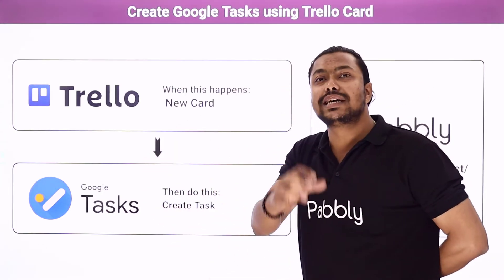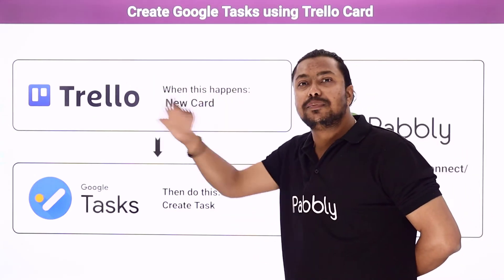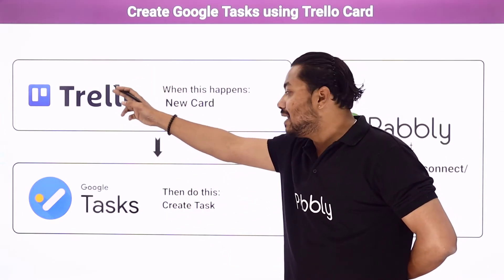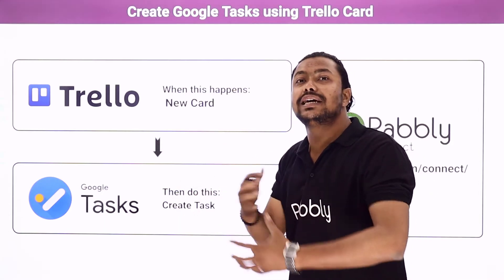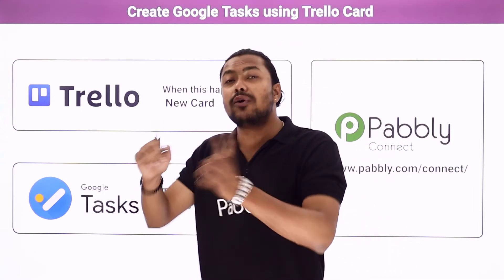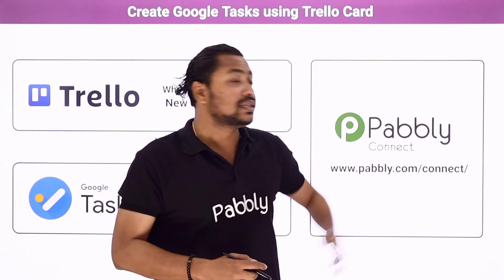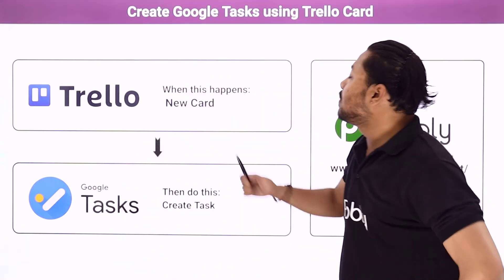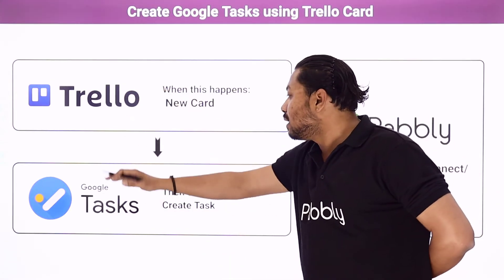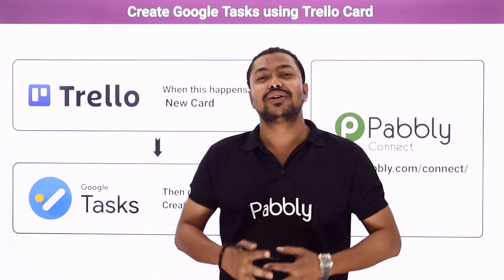There is a person who is creating slide content for us. What we will do is create different cards by our names, and from those cards we are going to automatically create a Google Task for the person who is creating slides for us. To do this automation, we are going to use Pabbly Connect, an integration and automation software which will connect Trello and Google Tasks together, so that whenever a new card is created, a new task will automatically be created in Google Tasks. If you want to learn how to do this automation, come with me to the screen.